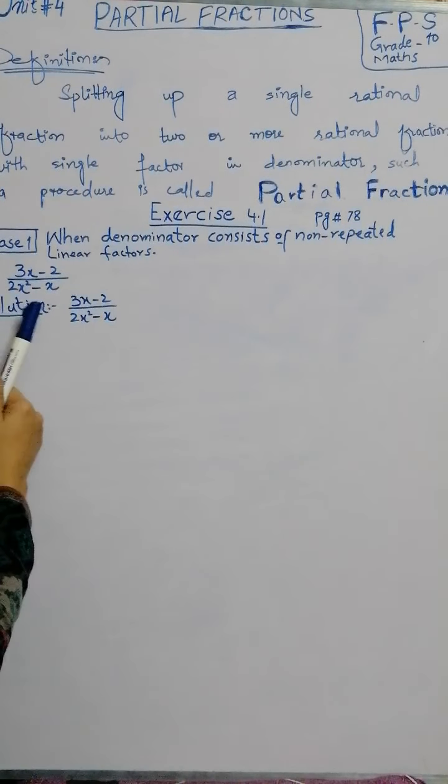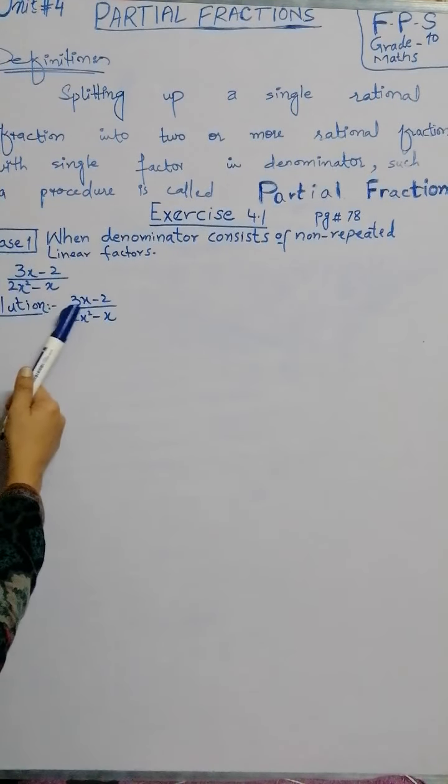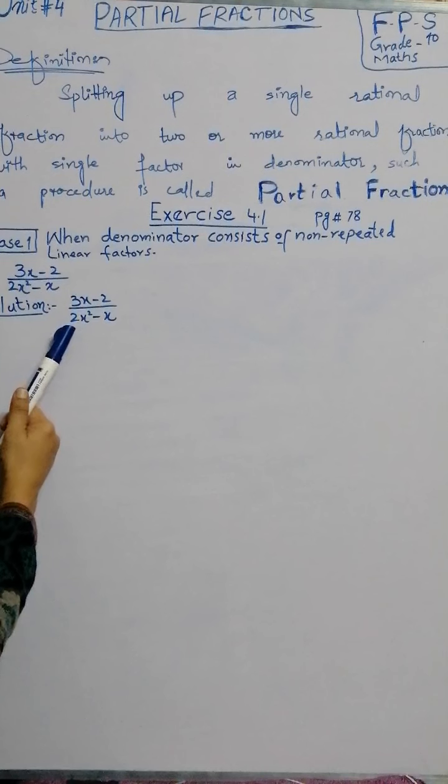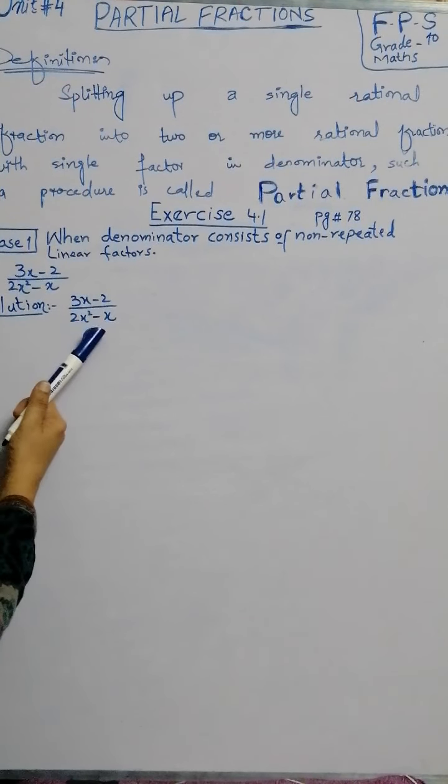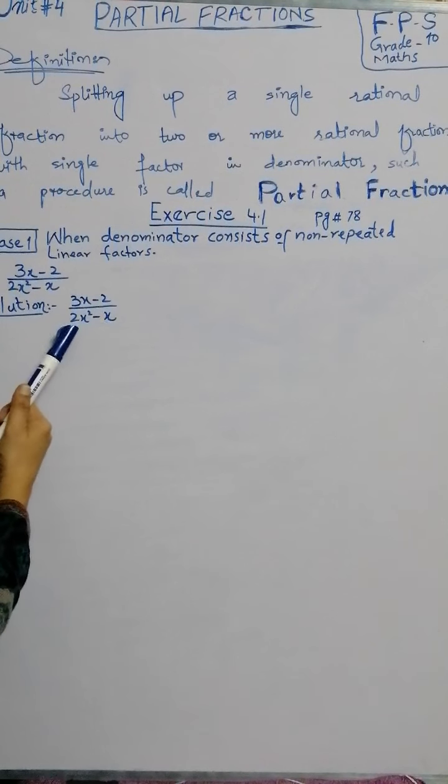Question number 1: We are given a single fraction, 3x minus 2 divided by 2x squared minus x. Here we have the denominator.